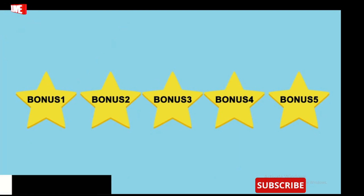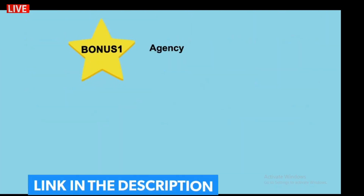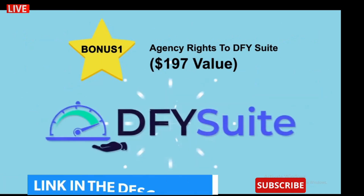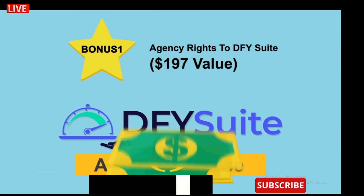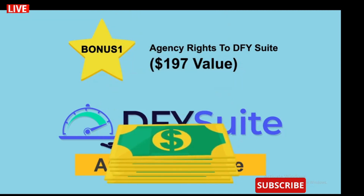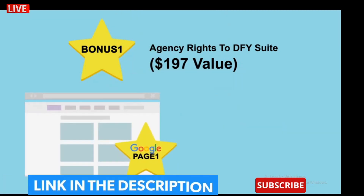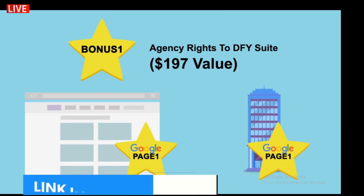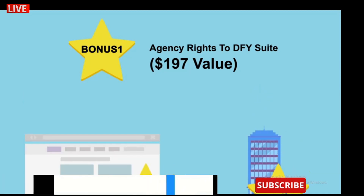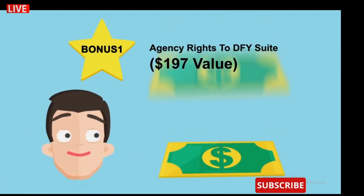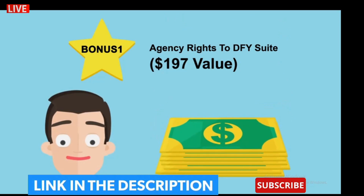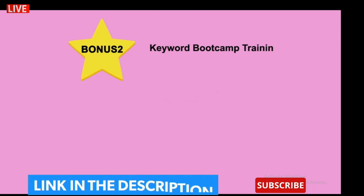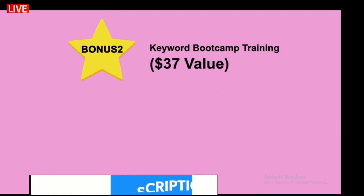We're also including limited-time launch bonuses. Bonus number one is Agency Rights to Done For You Suite — easily a $197 value. This opens up a whole new world of possibilities: you'll be able to rank your own niche sites and videos, and also rank your clients' websites and videos. Imagine how confident you'll be collecting that monthly recurring check from clients knowing you have Done For You Suite in your corner. Bonus number two is our Keyword Boot Camp Training, easily a $37 value.